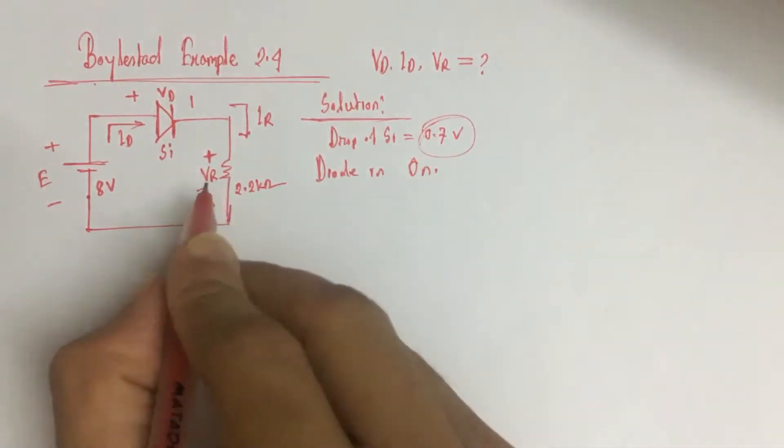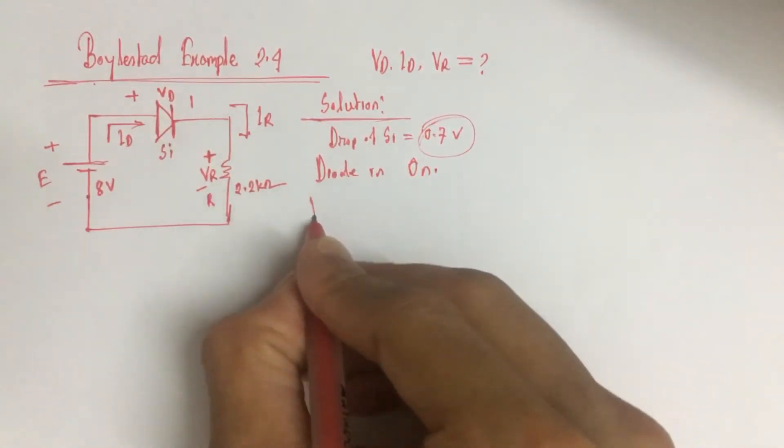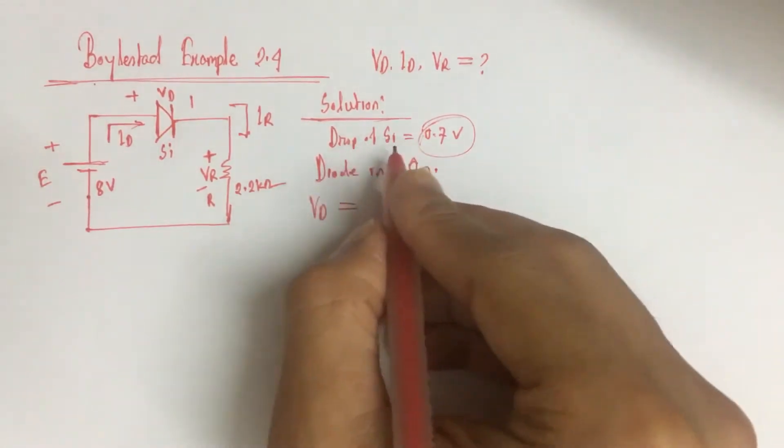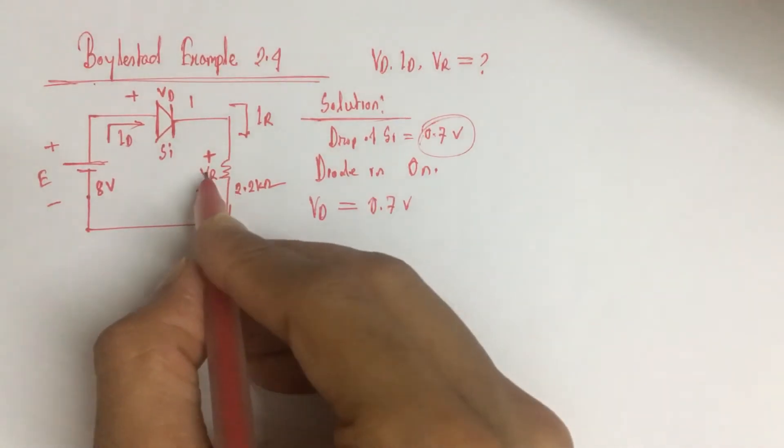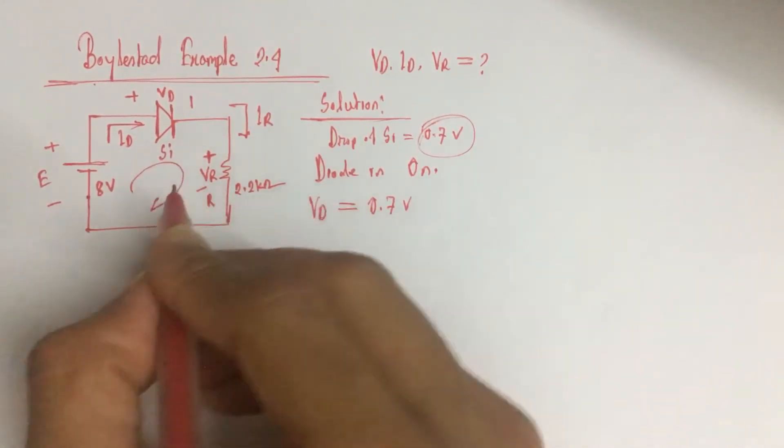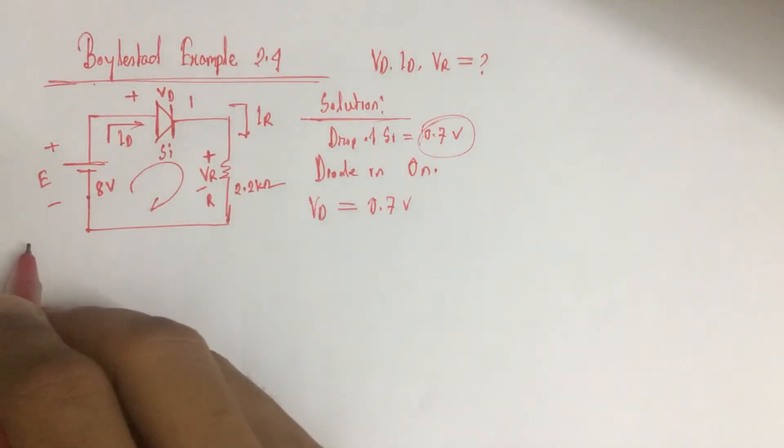Since the diode is on, the voltage VD equals 0.7 volt. Now, to identify VR, we can apply Kirchhoff's voltage law throughout the circuit.